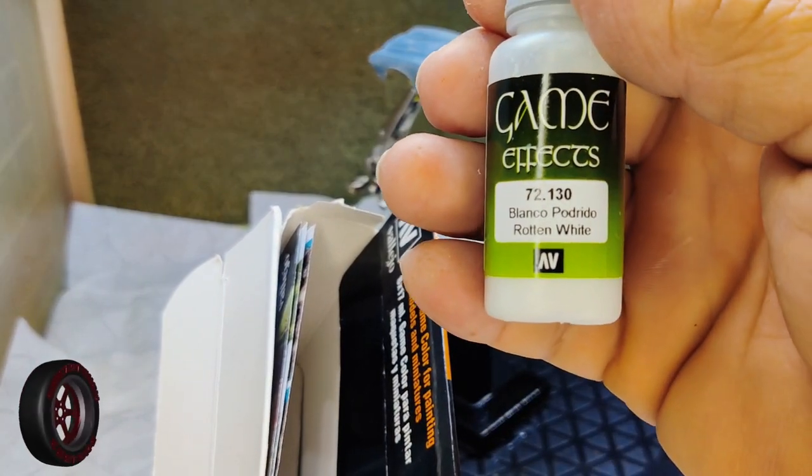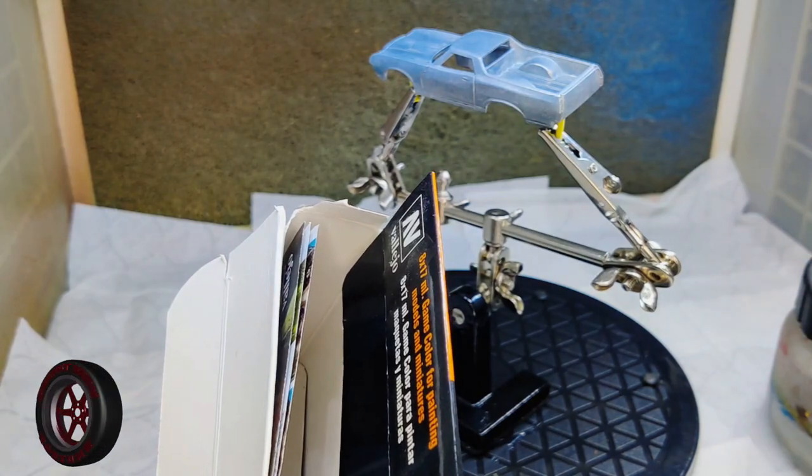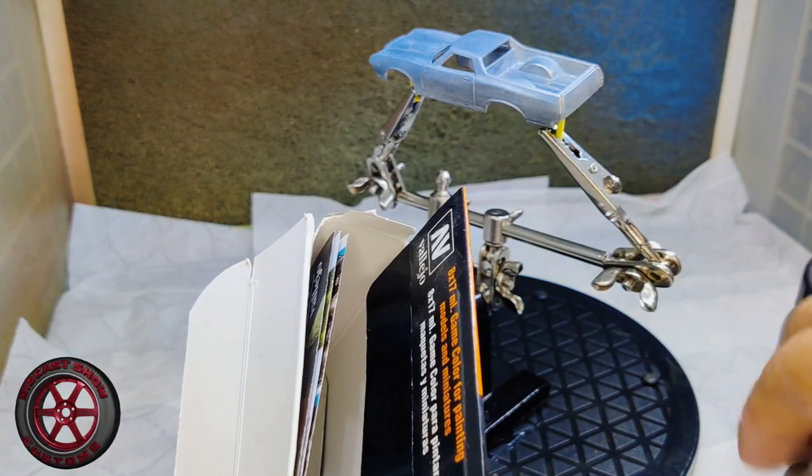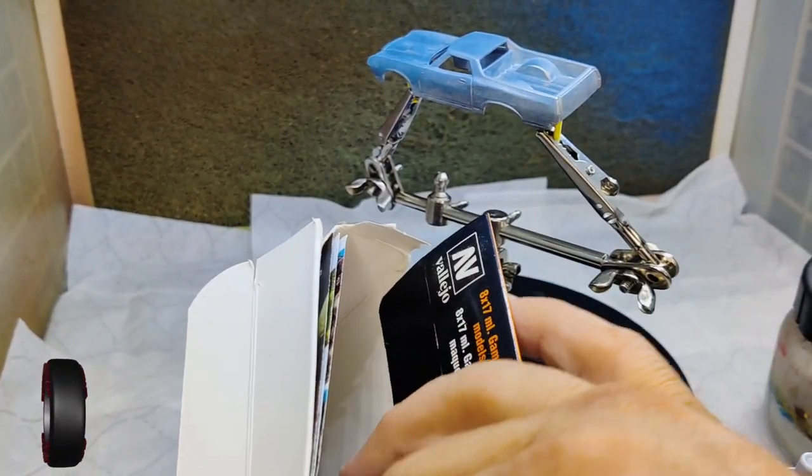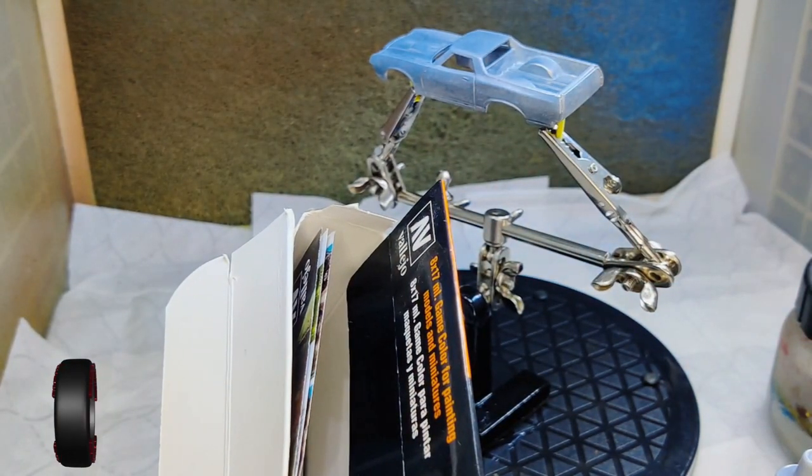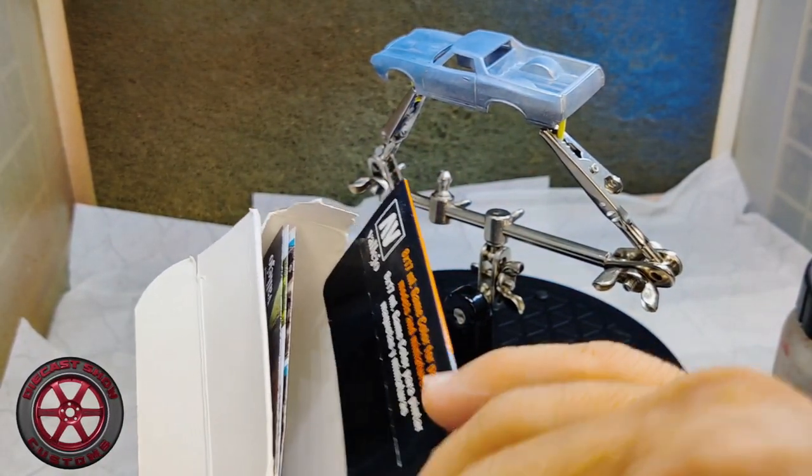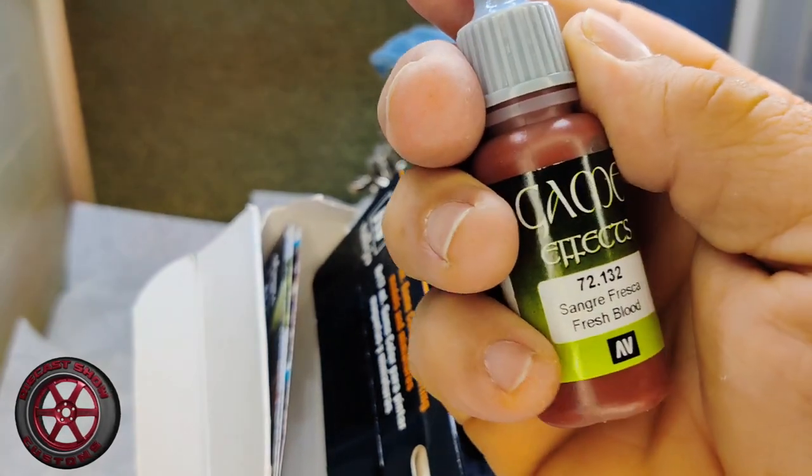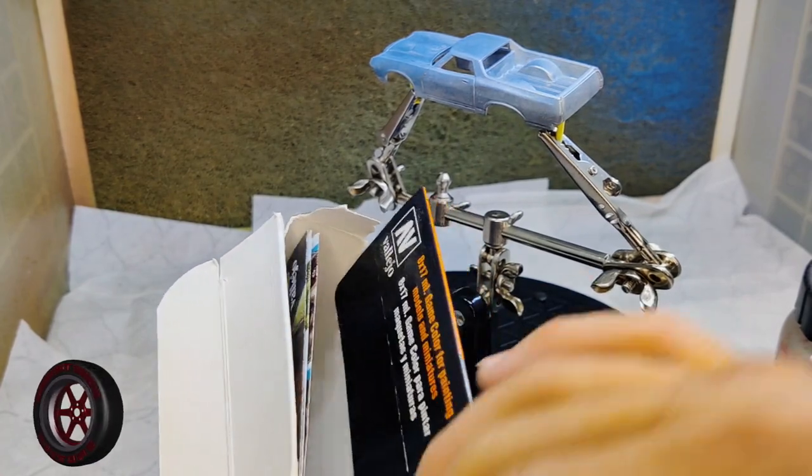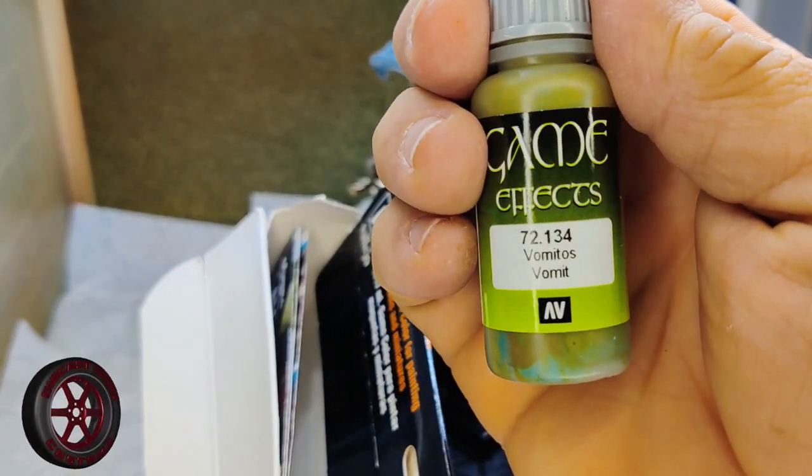That's the most important thing in here. It also comes with dry rust, rust run, white rust, dry blood, fresh blood, and vomit.